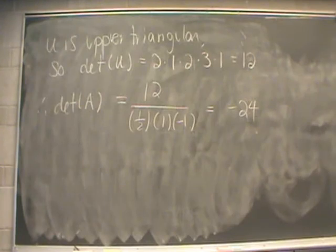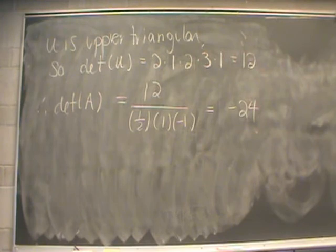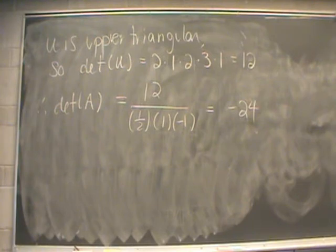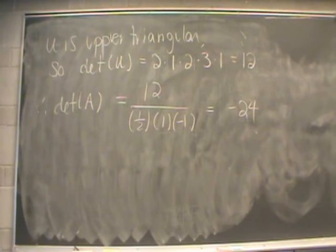Our last step is to calculate the determinant of the upper triangular matrix U. Since it's upper triangular, we multiply the numbers on the main diagonal: 2, 1, 2, 3, and 1. When we multiply all of those out, we get 12. By our formula, the determinant of A equals 12 divided by the determinants of our elementary matrices: one-half, one, and negative one. When we take 12 and divide by one-half, we get 24, and then dividing by minus one, we get negative 24 for our final answer.